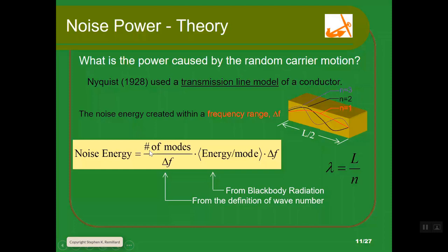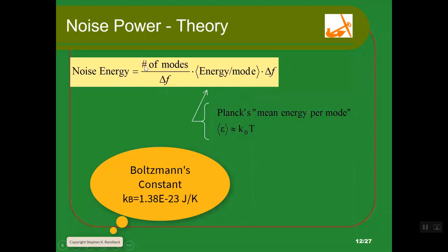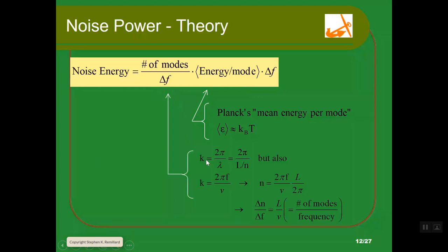The expression for energy per mode is very simple. It comes from Planck's black body radiation. The energy per mode is Boltzmann's constant times temperature. The number of modes per unit frequency we're going to come up with by looking at the wave number. Let's start with wave number: 2 pi over wavelength, and replace wavelength with L over N. The definition of wave number is omega over speed. When you equate these expressions, N is 2 pi f over V times L over 2 pi.